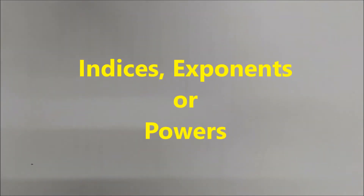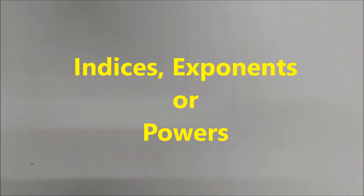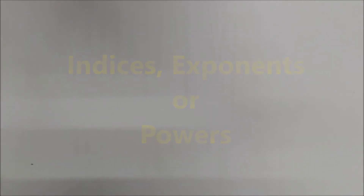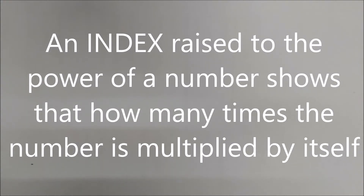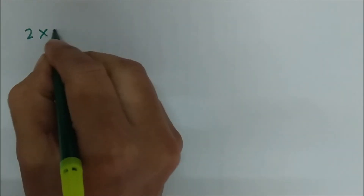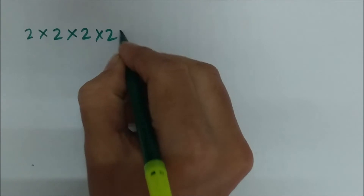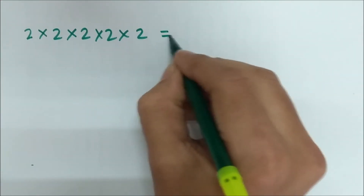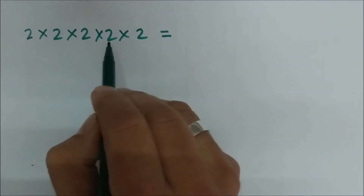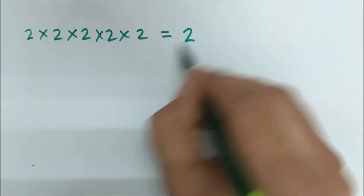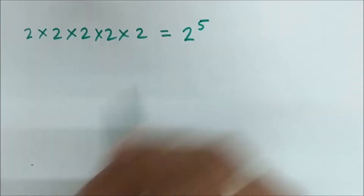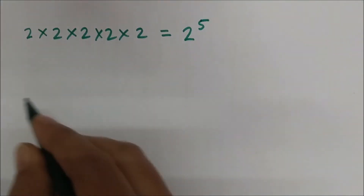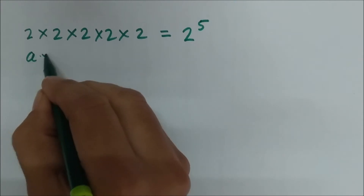Hello everybody. Today we will be studying indices, exponents, or powers. An index raised to the power of a number shows how many times the number is multiplied by itself. For example, 2 into 2 into 2, five times — we can write this in index form as 2 raised to the power 5.